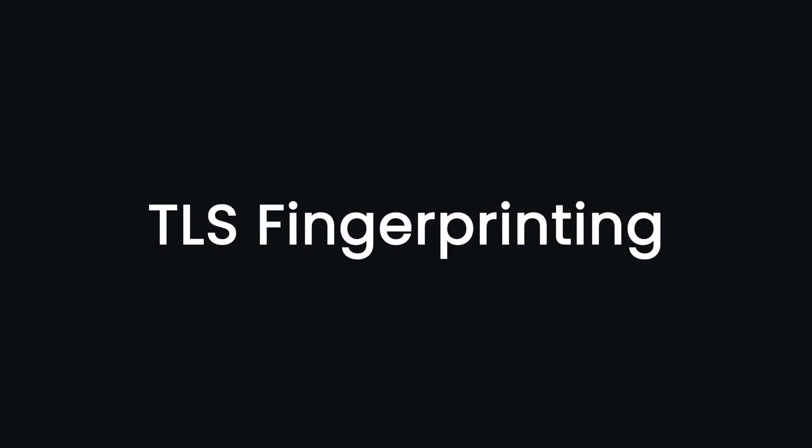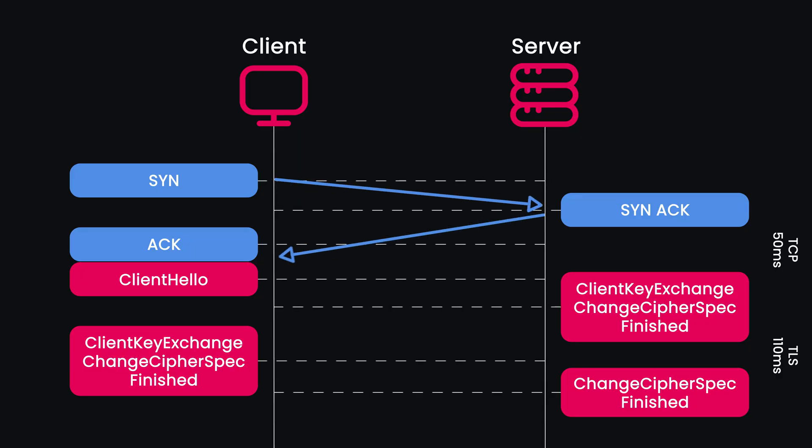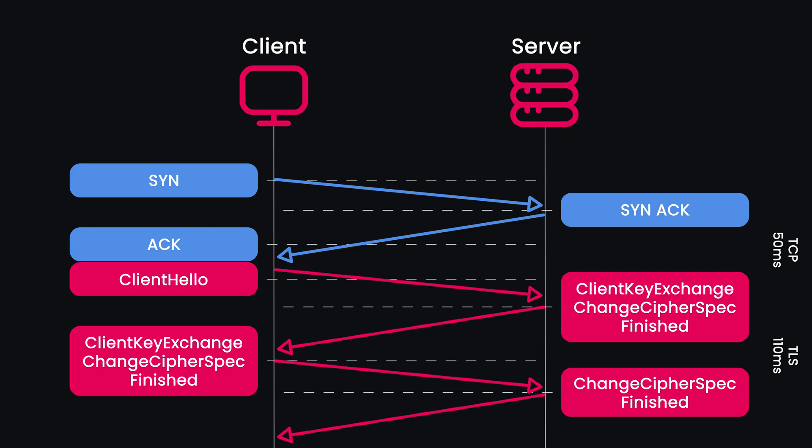TLS fingerprinting. TLS, or transport layer security, secures your connection to a website. During this connection, a unique sequence called the TLS handshake occurs. Cloudflare studies this handshake pattern, and if it's different from a typical browser, Cloudflare flags it as suspicious.